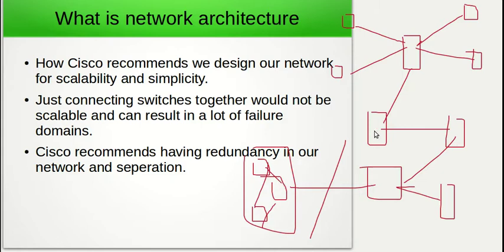And if we only had internet access in one office, that means that devices in the other office wouldn't even be able to access the internet. Or if a device fails, devices that connect to that switch would have no internet access and no access to network resources. As you can see, a single link going down or a single switch going down would cause a massive network outage — there's no redundancy here.